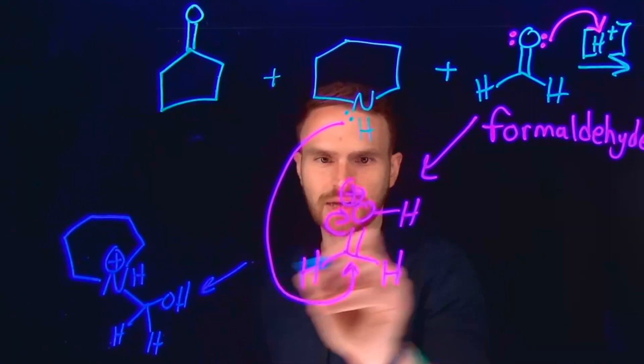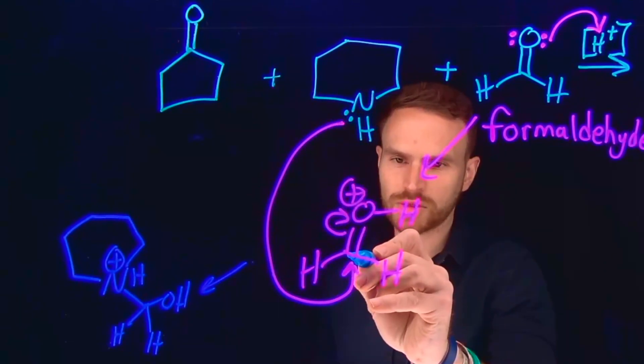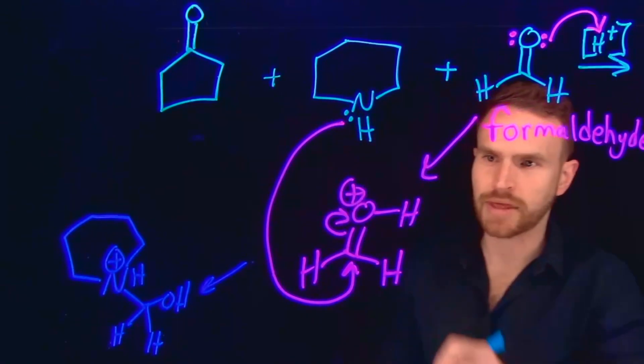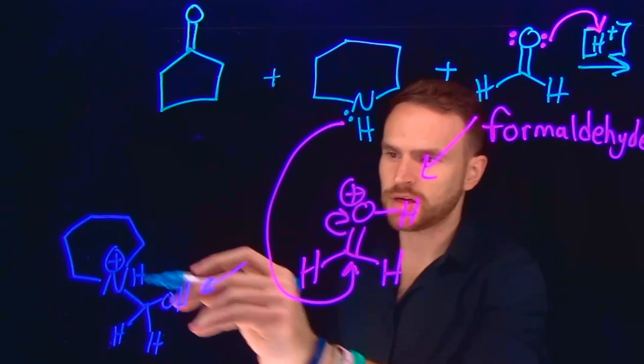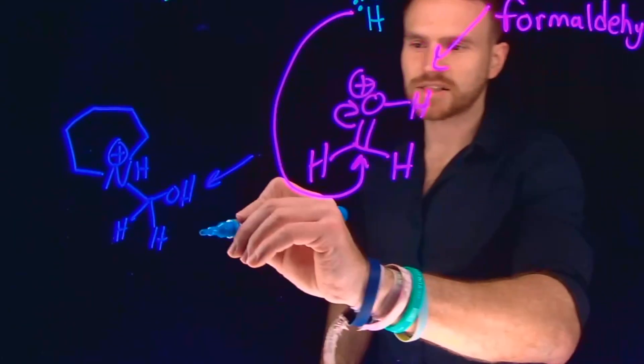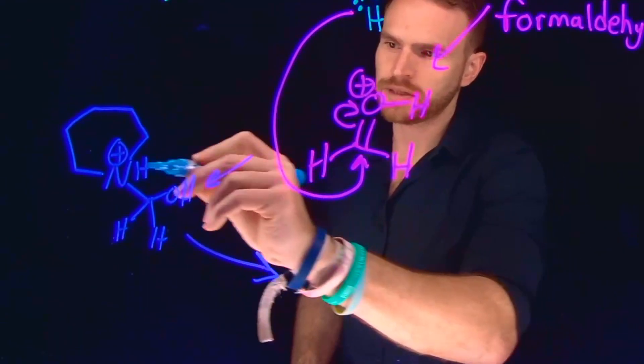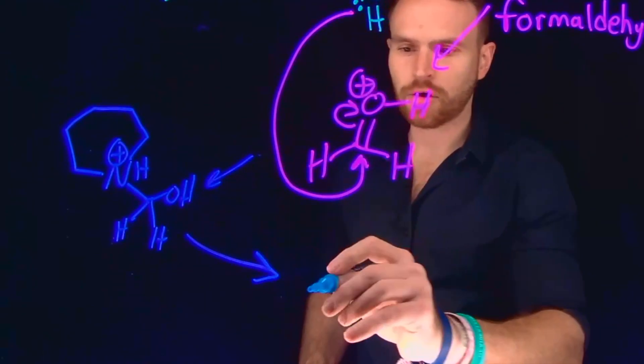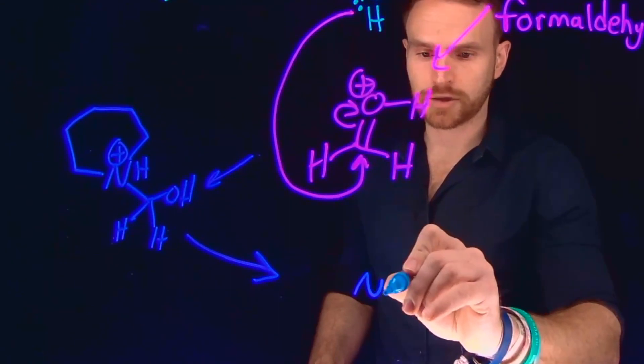So remember this carbonyl carbon, it was what was attacked. So we are left with an alcohol at that position. And this is the product of this transformation. And what will happen next is just going to be a proton transfer between this nitrogen hydrogen and this alcohol, giving us a neutral nitrogen.